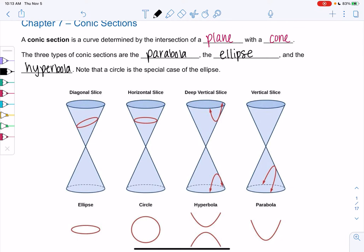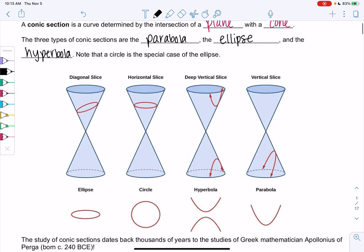A circle is also a special case. You can see that below, but we've already covered circles. So these are my double cones, and what we're going to do is basically take a plane, like a piece of paper, and see where they intersect. If I make a diagonal slice, it makes this ellipse.